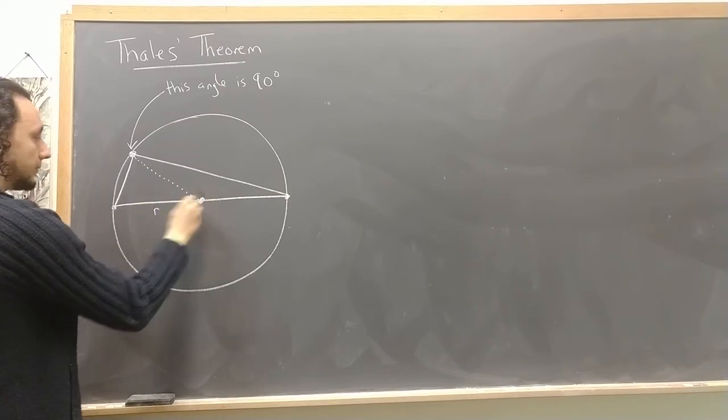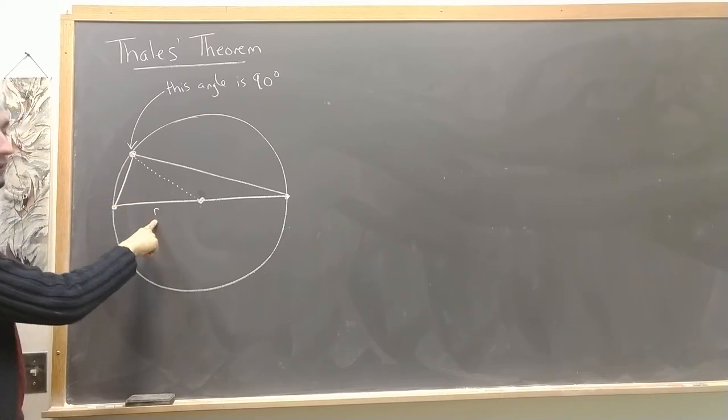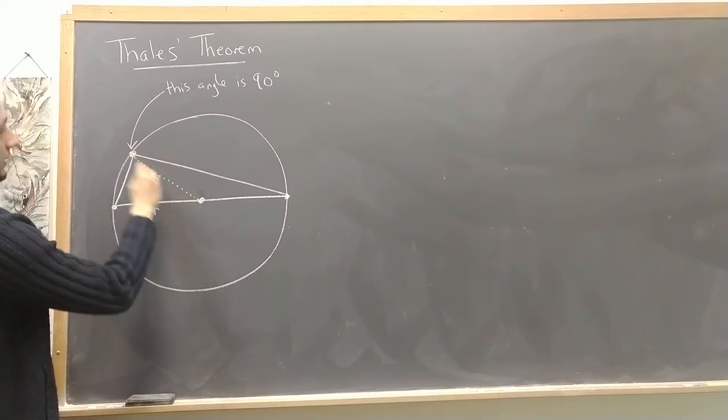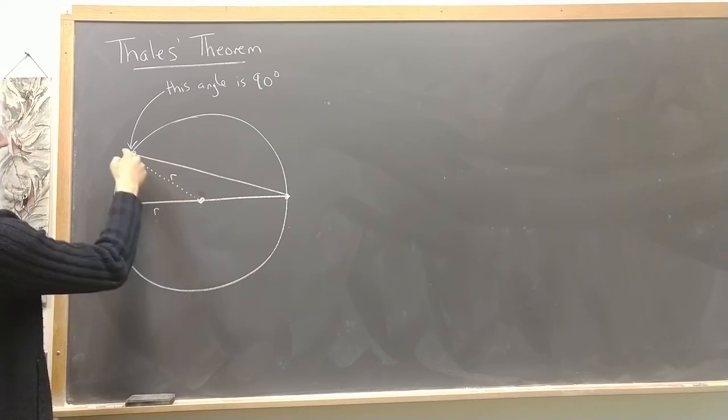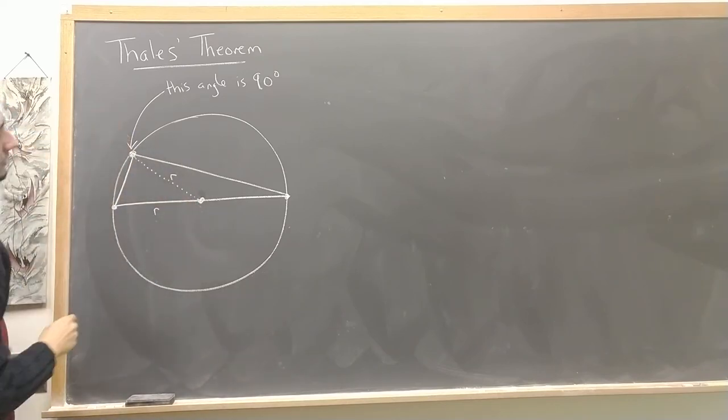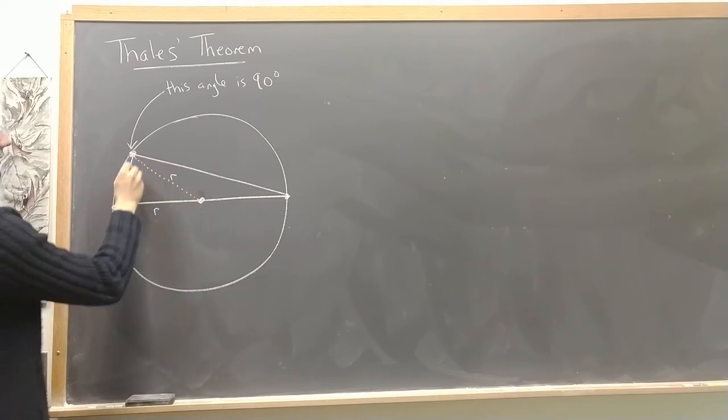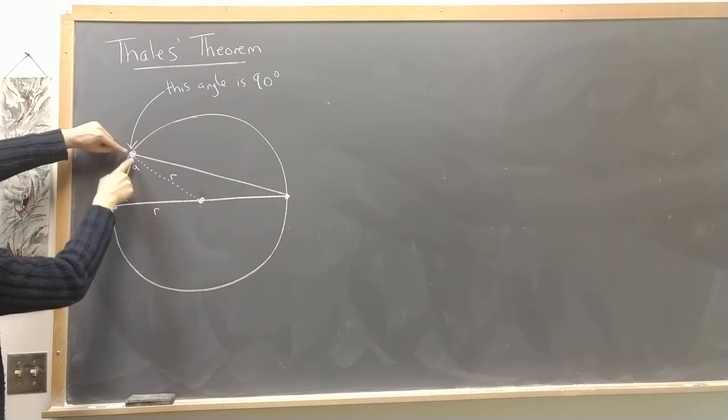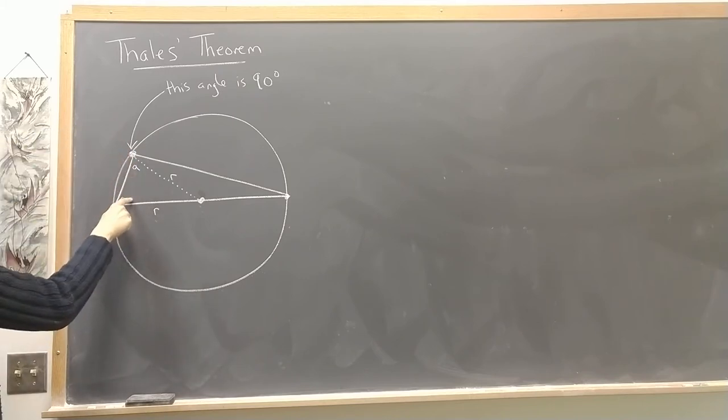This distance from the center of the circle to the edge, we'll label that r for the radius of the circle. This dotted line is also a radial line of the circle, which means this triangle here is an isosceles triangle. So this angle A, that's this corner of the triangle, is the same as this angle A.